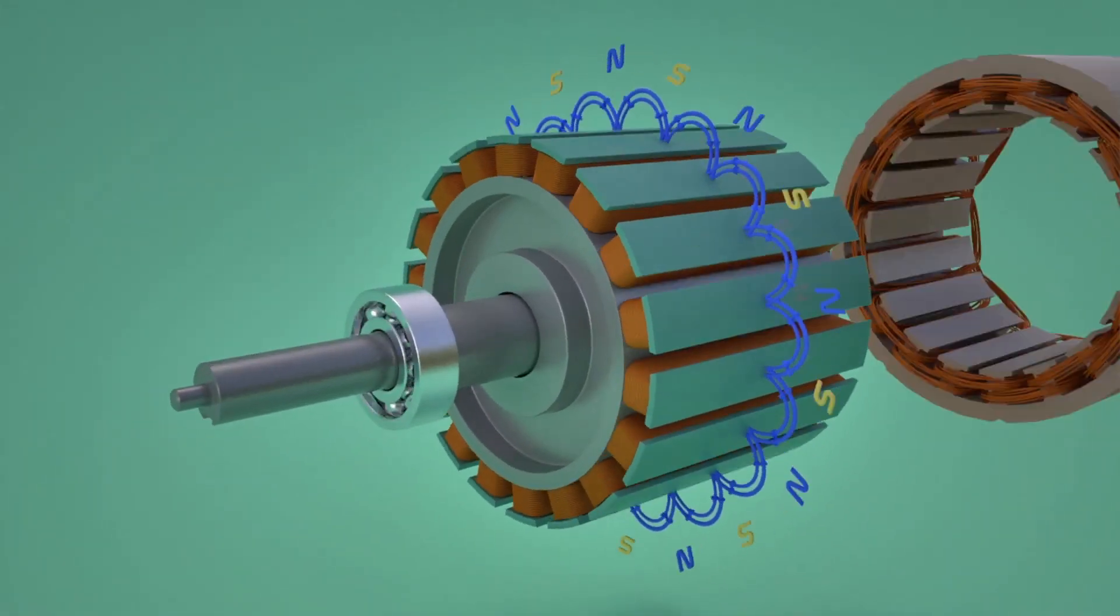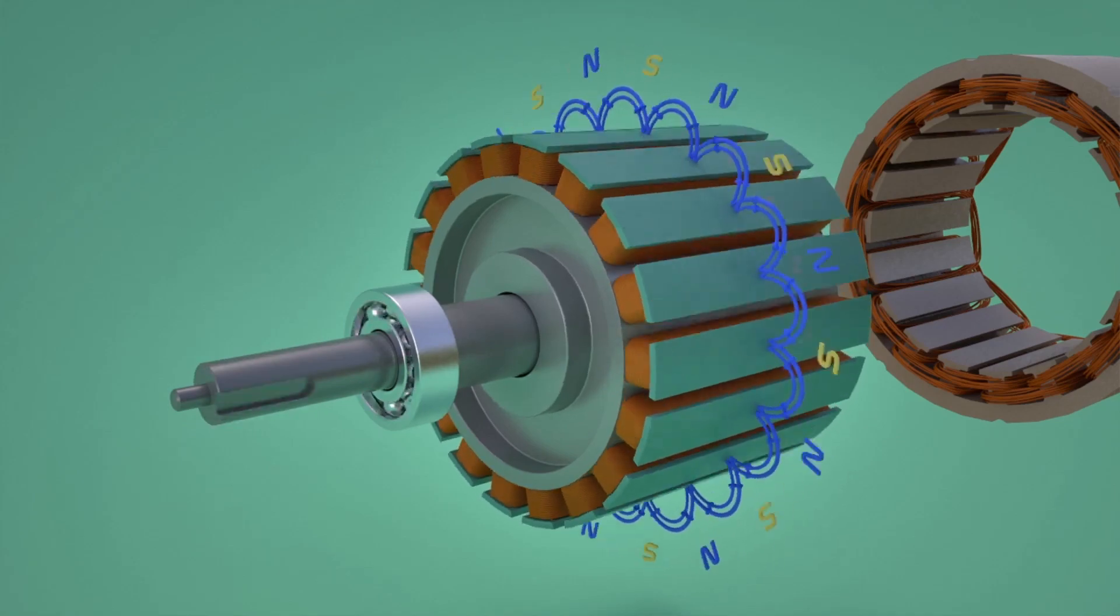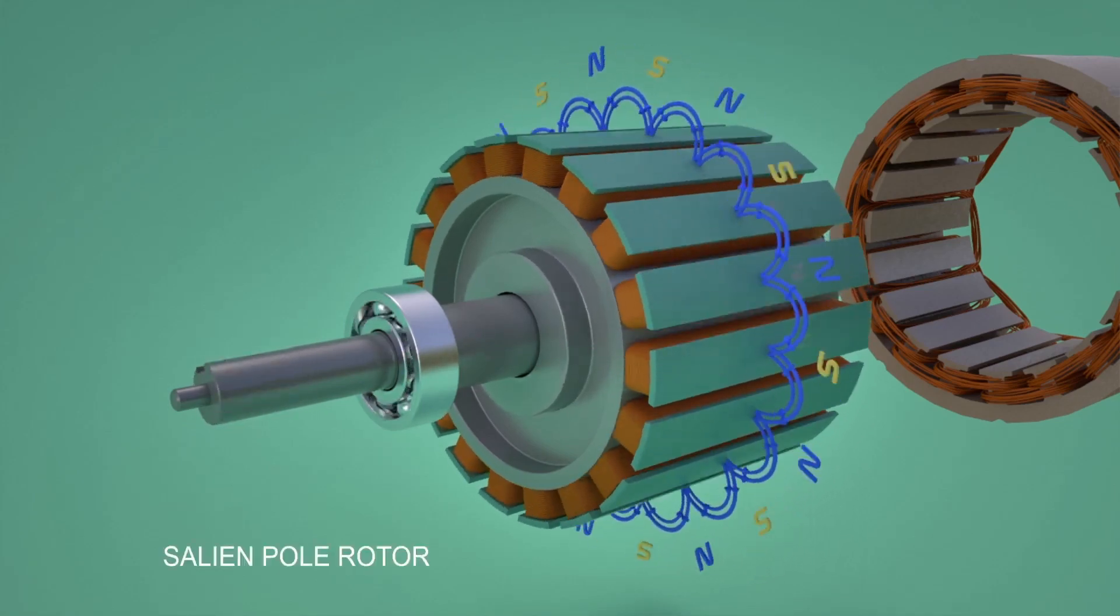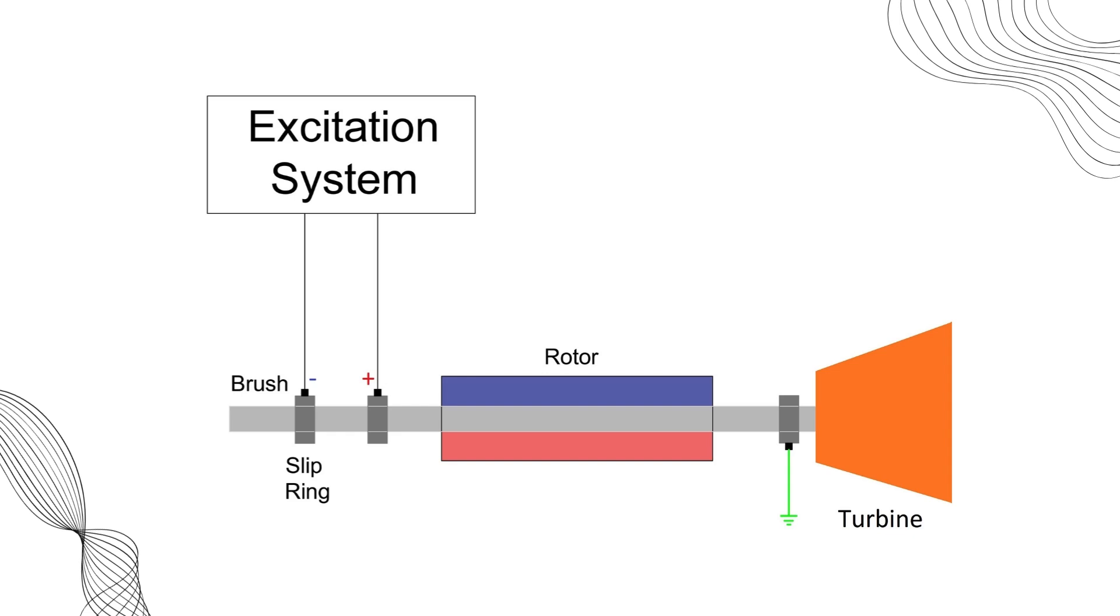As you know, to produce power from an alternator, we need a rotating magnetic field. To achieve this, we require a turbine to rotate the rotor of the alternator and a DC supply to create the magnetic field. And to provide the DC supply to the rotor, we need an excitation system.